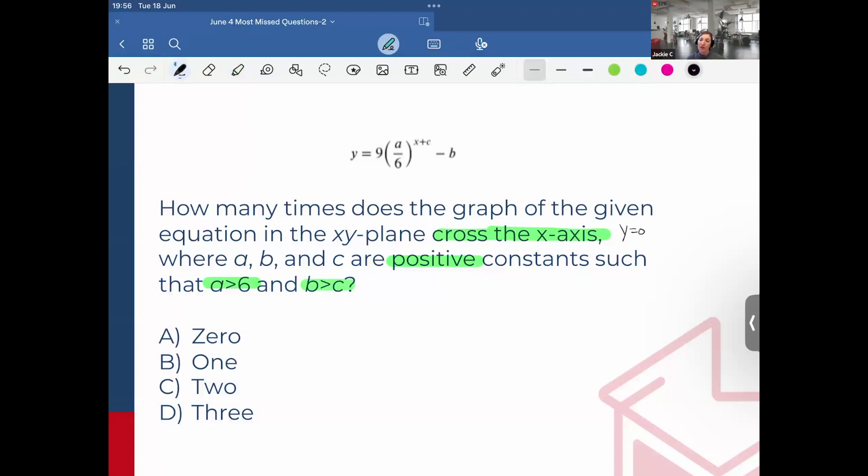Okay, so first steps first with this problem, I would plug in for when y is equal to zero, just to see how many times the graph this function crosses the x-axis. So let's do that. Put zero equals 9 times (a/6) to the x plus c, minus b. I'm going to add b to the other side of the equation. So I'd have b equals 9 times (a/6) to the x plus c. And then just to simplify it further, I'm going to divide each side by 9. So b/9 is equal to (a/6) raised to the x plus c.